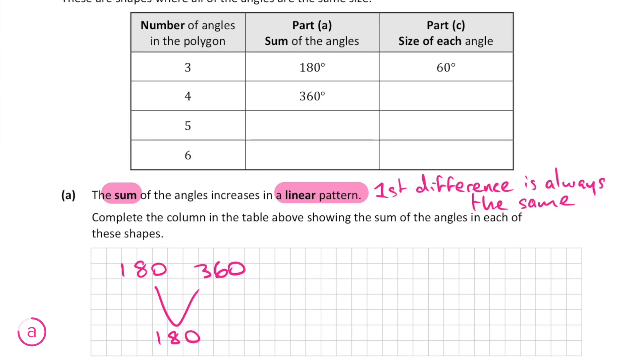So to work out the sum of the angles for the next two polygons we can just add 180 to the previous sum. When we do this we get the next two sums to be 540 and 720 degrees. And that's worth the first six marks.